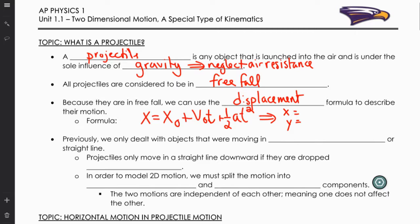Previously we dealt with objects that were moving in one dimension, which means they're moving in a straight line. Everything we did prior was one-dimensional motion, so the object moved vertically or horizontally. Now the object is going to move vertically and horizontally.